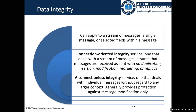For integrity, we can apply it to a stream of messages, a single message, or even selected fields inside a message. Integrity ensures the data is not changed while being sent between sender and receiver. There are two types: connection-oriented integrity and connectionless integrity. Connection-oriented integrity deals with a stream of messages — ensuring messages are received as sent, with no duplication, insertion, modification, reordering, or replays.